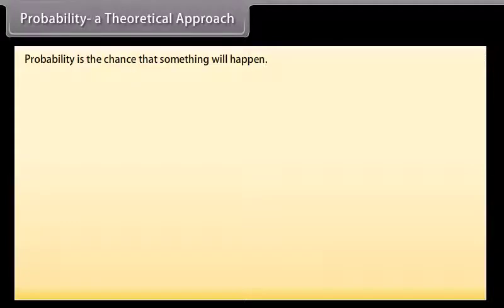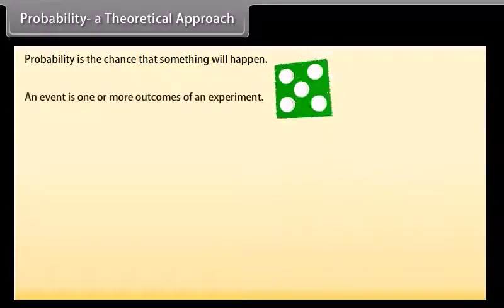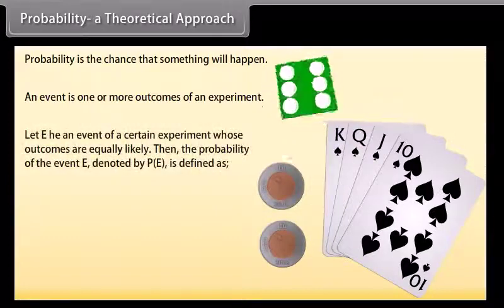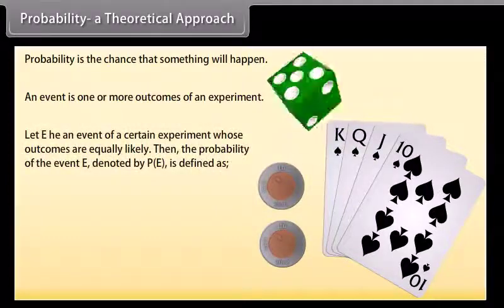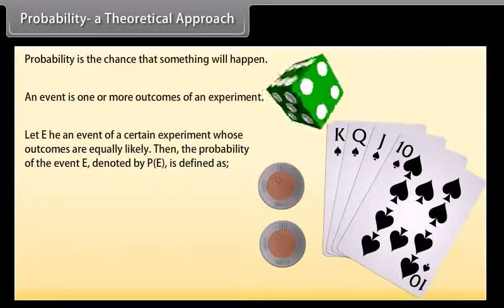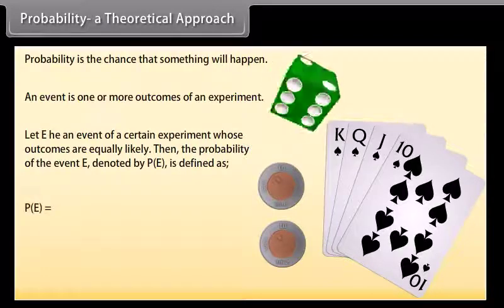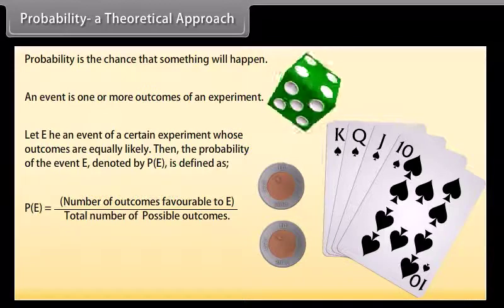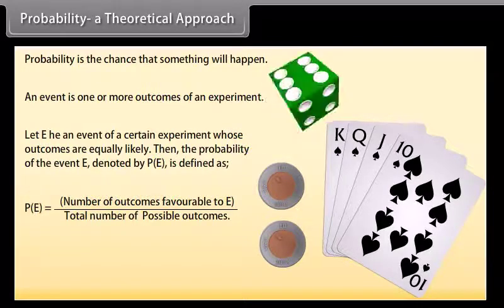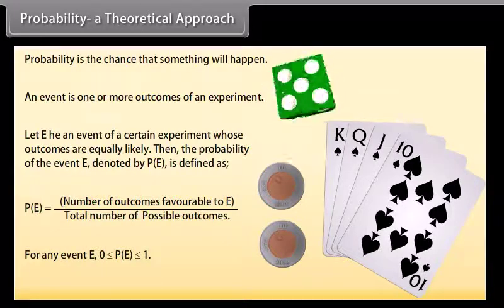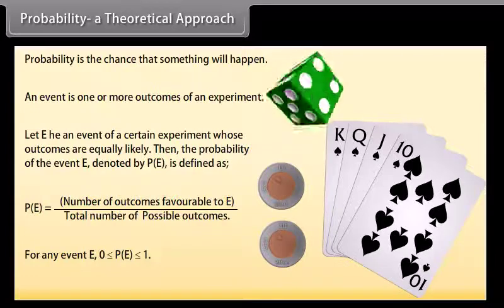Probability — a theoretical approach. Probability is the chance that something will happen. An event is one or more outcomes of an experiment. Let E be an event of a certain experiment whose outcomes are equally likely. Then the probability of event E, denoted P(E), is defined as: P(E) = number of outcomes favourable to E divided by total number of possible outcomes. For any event E, 0 ≤ P(E) ≤ 1.